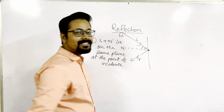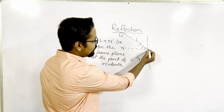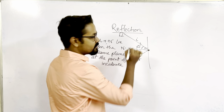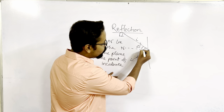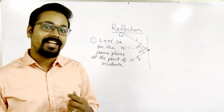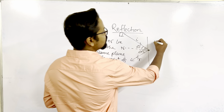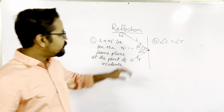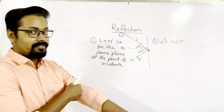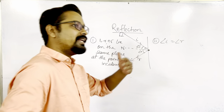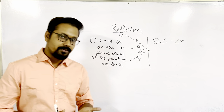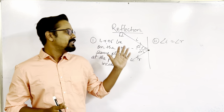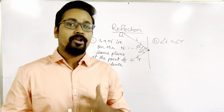The second law of reflection states that the angle formed by the incident ray with the normal is called the angle of incidence, and the angle formed by the reflected ray with the normal is called the angle of reflection. The angle of incidence is always equal to the angle of reflection, whether it is a plane or a rough surface.